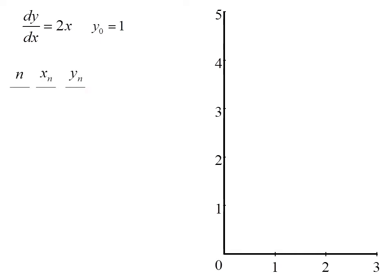We make a table with n, x sub n, and y sub n. So after zero iterations, we start at a point where x equals 0 and y equals 1. So we put that dot on our graph.